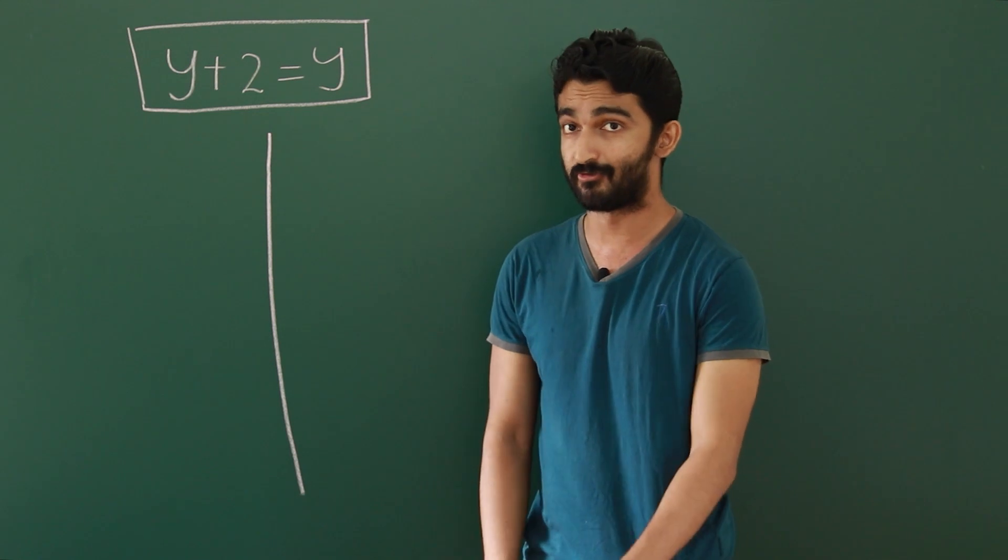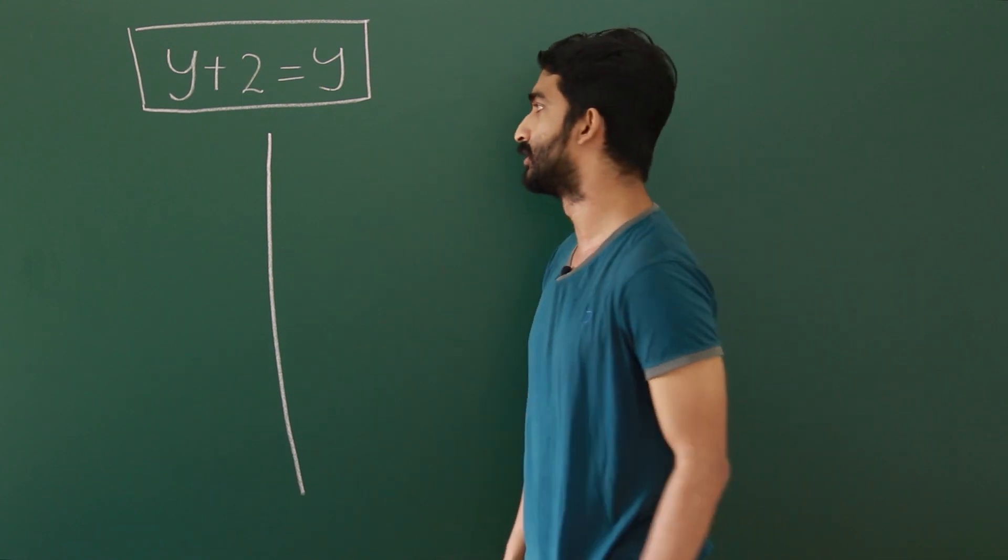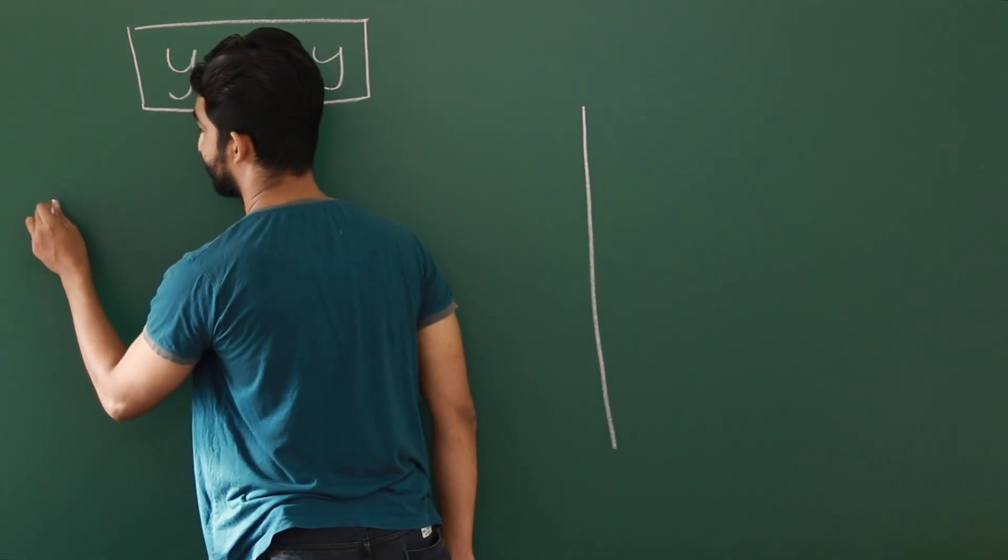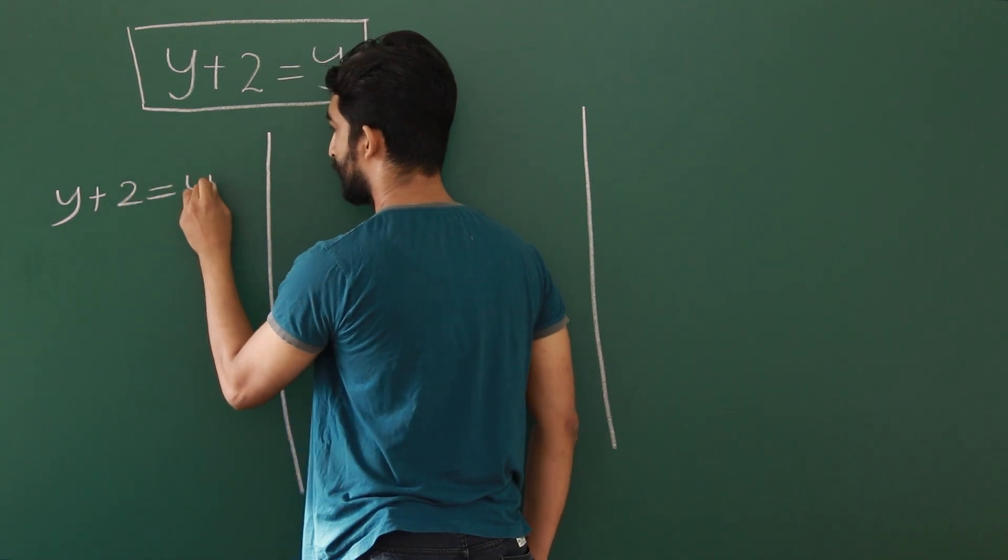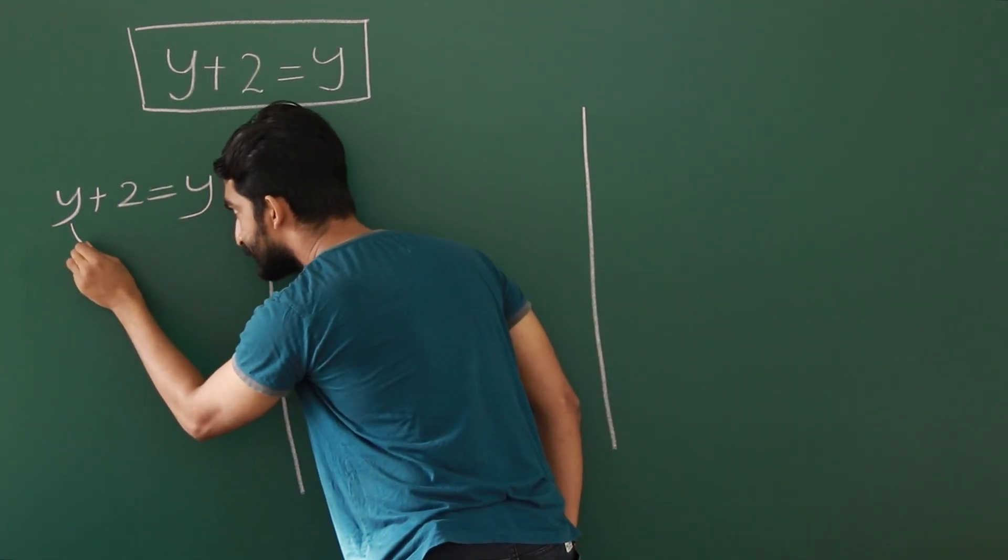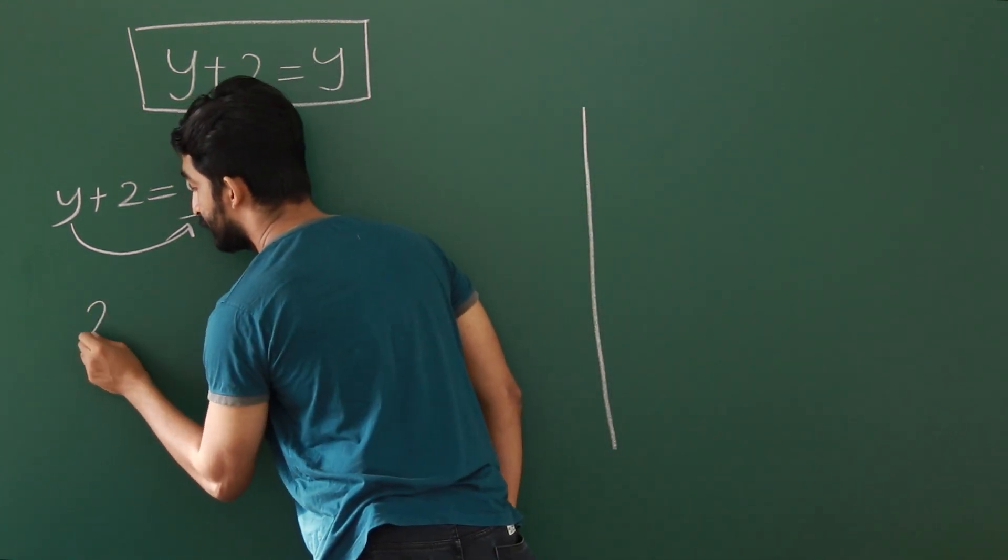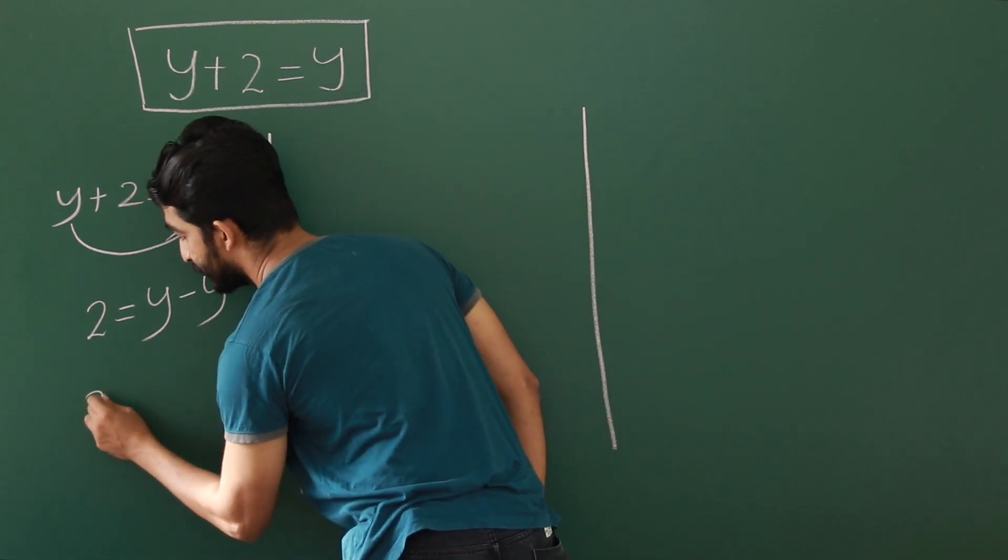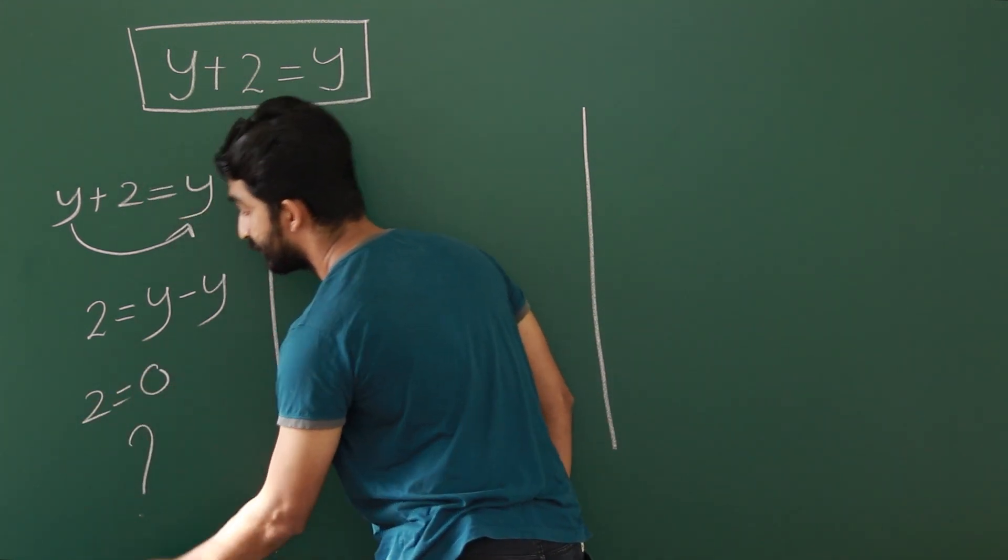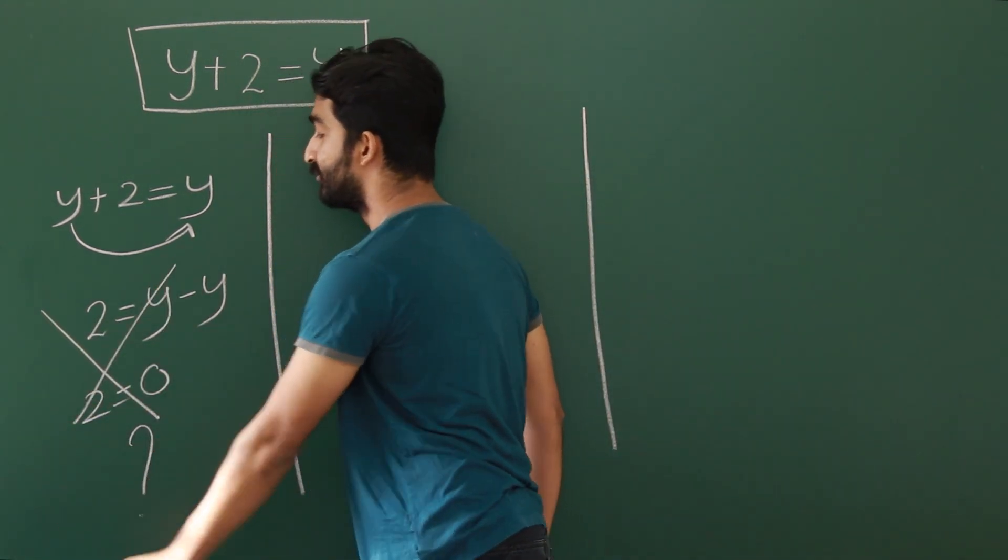y plus 2 equals y. This is the equation. If someone tries to solve it, usually they try to do this: y plus 2 equals y. You bring this y to the other side, so it will be 2 equals y minus y, which is 2 equals 0. Oops. So this methodology is not working.